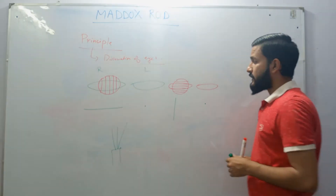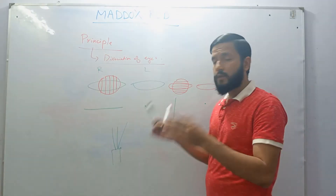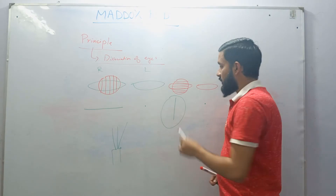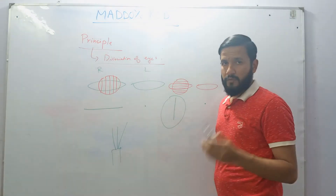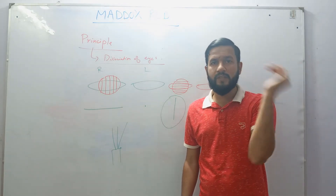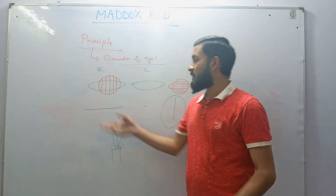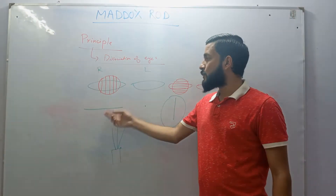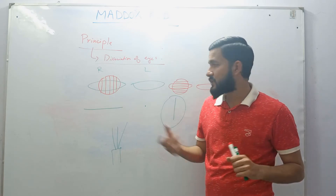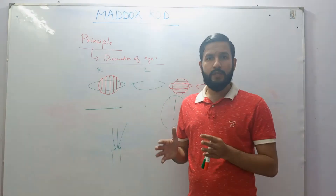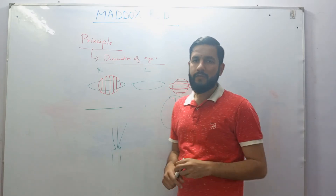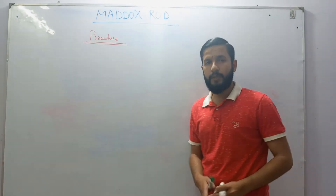To measure horizontal deviations — esotropia and exotropia — you need a vertical line image, so the Maddox rod must be held horizontal. To measure vertical deviations — hypertropia and hypotropia — you need to place the Maddox rod vertically, with the axis of individual cylinders at 90 degrees. To measure torsional deviations, you cannot use a single Maddox rod; you have to use a procedure known as the double Maddox rod, which will be discussed in the next video.